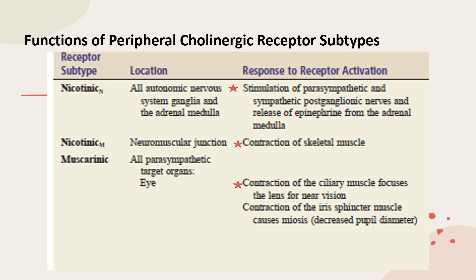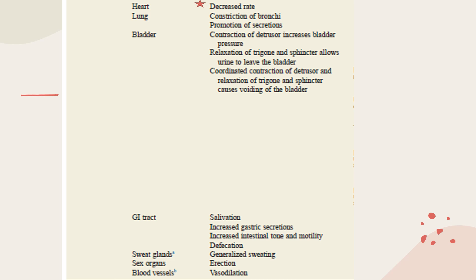Muscarinic receptor activation in the eye causes contraction of the ciliary muscle and contraction of the iris sphincter muscle causing miosis. In the heart, it decreases heart rate. In the lungs, there is constriction of bronchi and promotion of secretions. In the bladder, contraction of the detrusor, relaxation of the trigone and sphincter, causing voiding. In the GI tract, it causes salivation, increased gastric secretions, increased intestinal tone and motility, and defecation. In the sweat glands, generalized sweating. In the sex organs, erection. In the blood vessels, vasodilation.